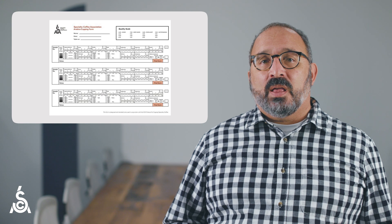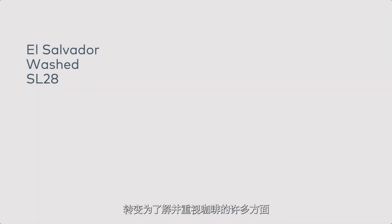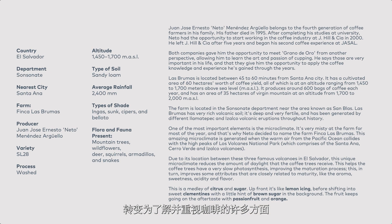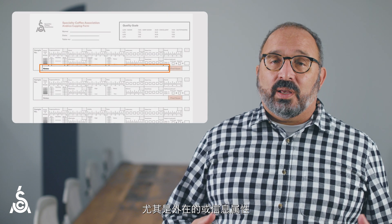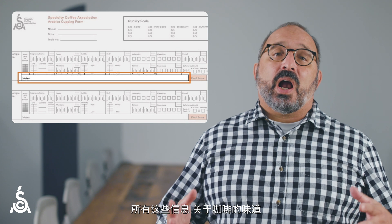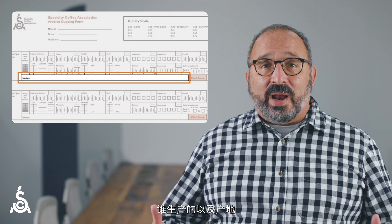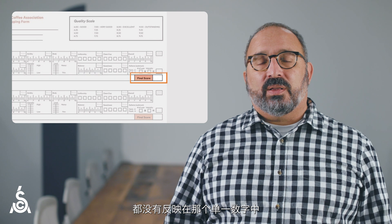In 2021, the SCA embarked on a project to evaluate and revise the 2004 cupping system. So we began our research. And in our research, we learned that the specialty coffee industry had gone from knowing just a few things about a coffee to knowing and valuing many things about a coffee. We also learned that in the 2004 form, there just isn't enough space to capture the wider range of attributes — especially extrinsic or informational attributes — that we value now. And even more importantly, none of that information about how a coffee tastes, about who produced it and where, anything about what we really love and appreciate about a coffee gets reflected in that single number, the total cupping score.